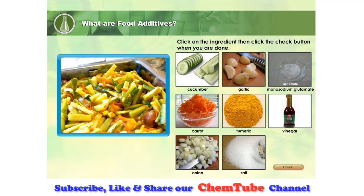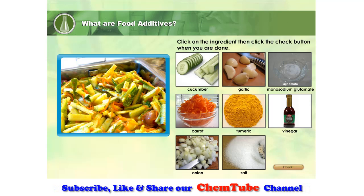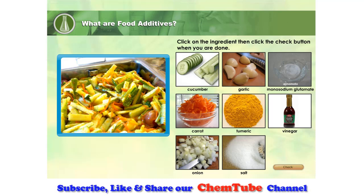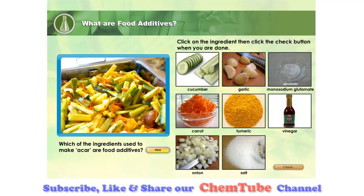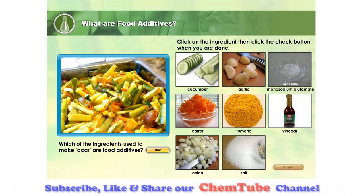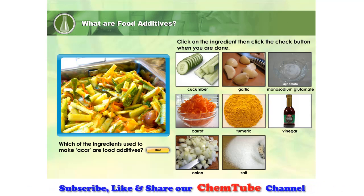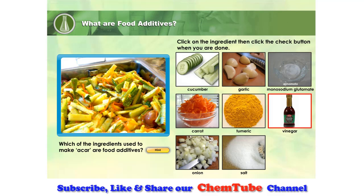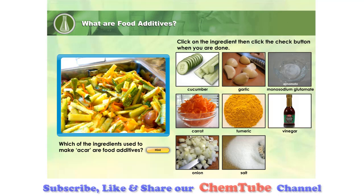The list of ingredients together with their photographs is displayed. Which of the ingredients used can be grouped as food additives? The turmeric, salt, monosodium glutamate and vinegar are food additives that give the Acar its special taste.